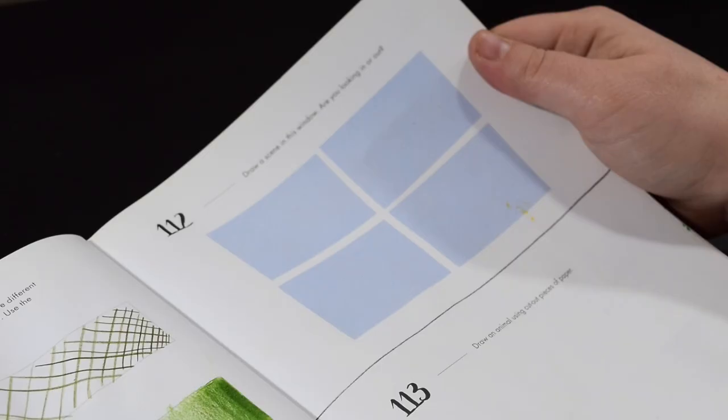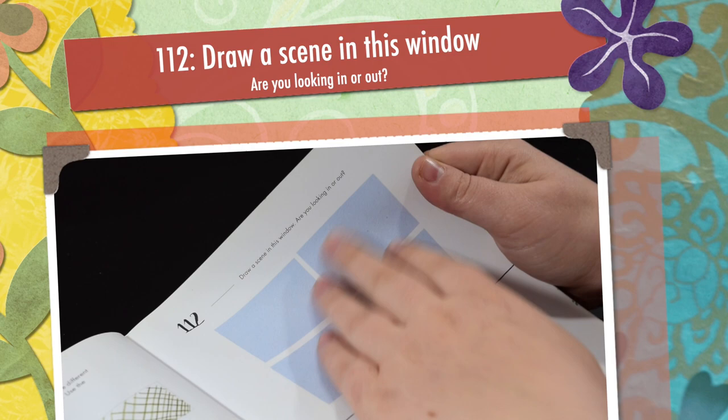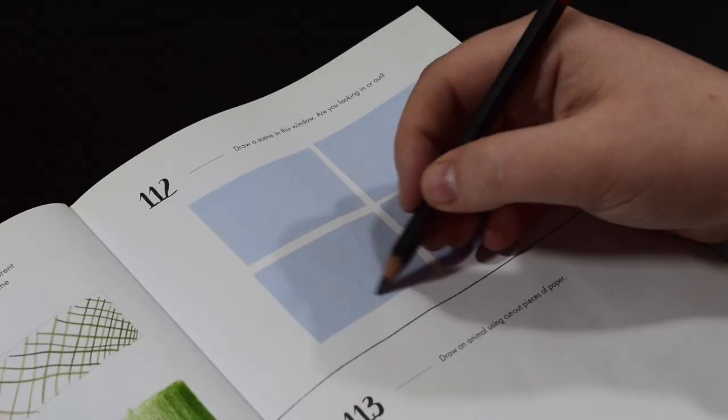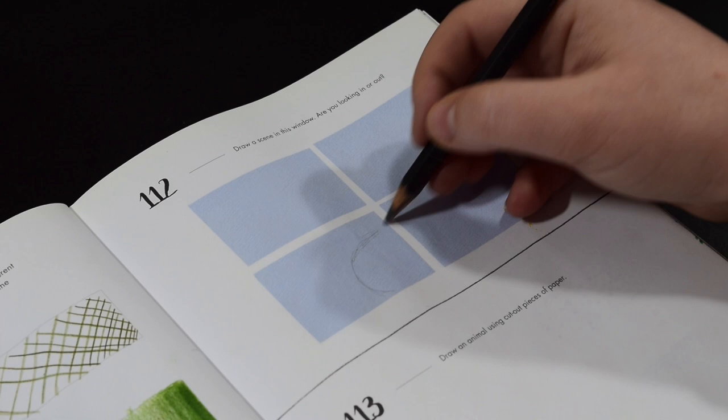Moving on to prompt 112: draw a scene in this window. Are you looking in or out? Now straight away I thought I was going to do a landscape kind of painting behind it, but now it says 'are you looking in or out?' It's kind of made me change my mind because I know most people will want to do like a landscape in the background.